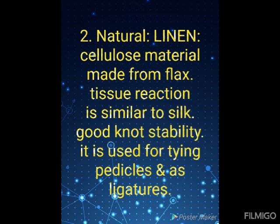The second natural non-absorbable suture material is linen. It is a cellulose material made from flax, twisted to form a fiber. Tissue reaction is similar to silk. The material has good knot stability and gains 10% tensile strength when wet, which is fairly unique. It has excellent knotting properties.